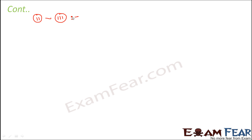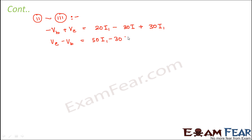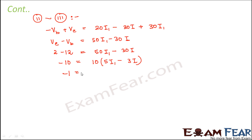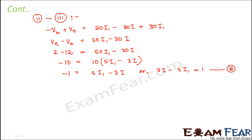Subtracting equation three from equation two, we get Vc minus Vb equals 50I1 minus 30I. Substituting Vc = 2 and Vb = 12, we get minus 10 equals 50I1 minus 30I, which simplifies to 3I minus 5I1 equals 1. This is equation B.